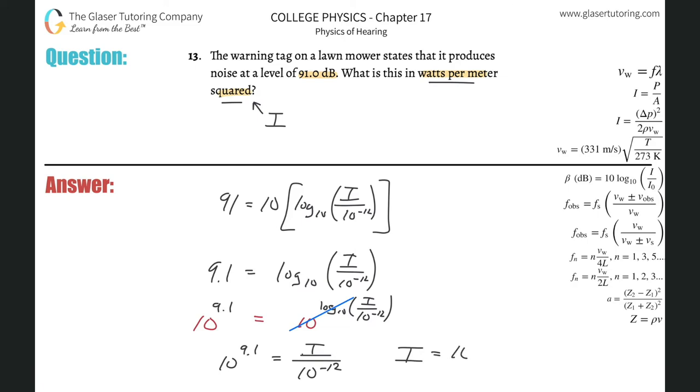And you're going to get a value of approximately 10 raised to the negative 2.9. So plug that into the calculator: 10 raised to the negative 2.9. What do you get? You get about 0.00126.